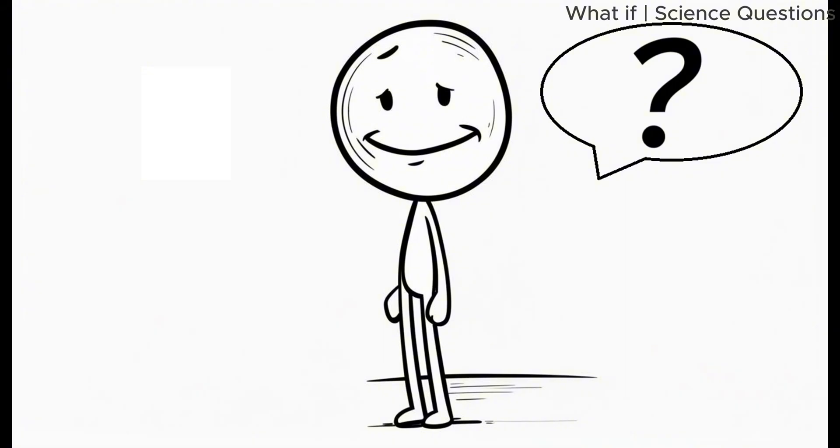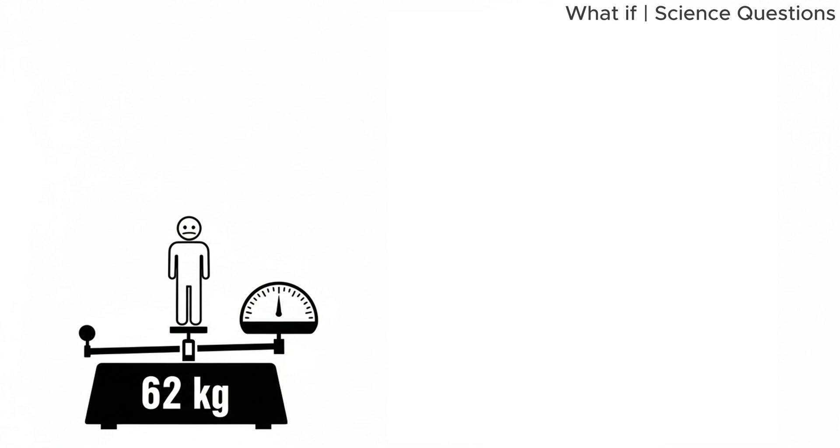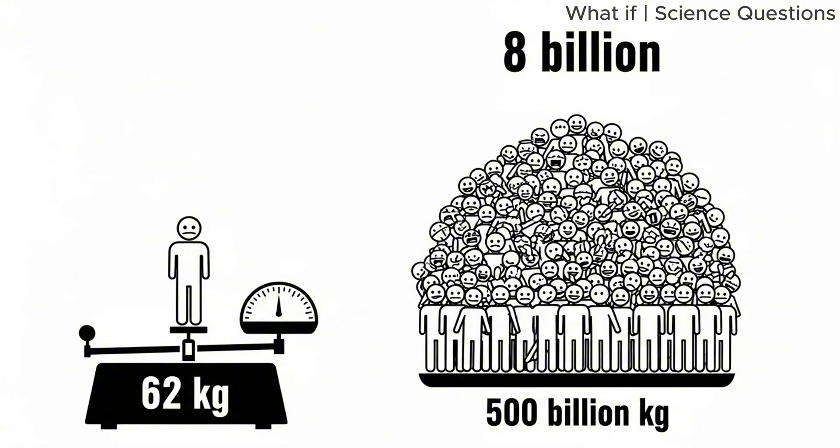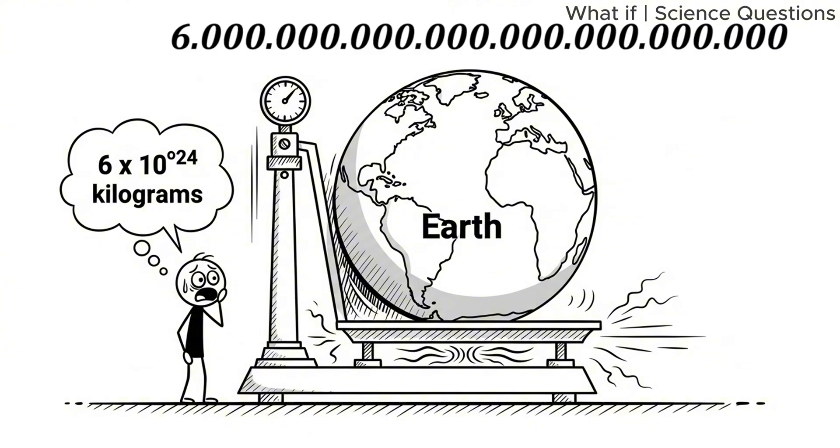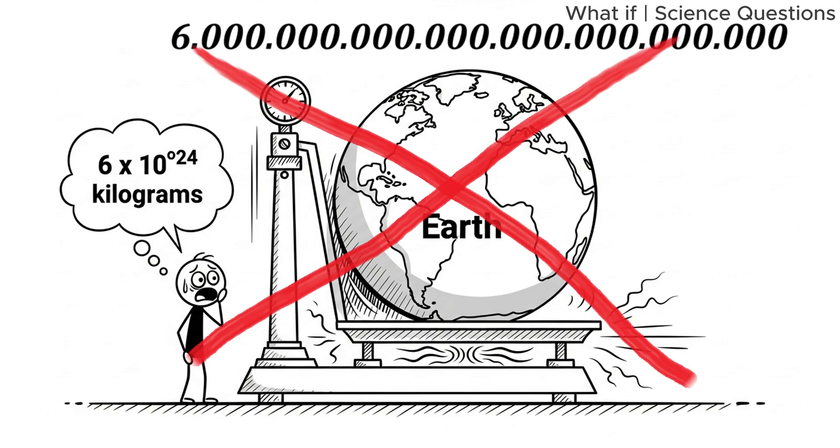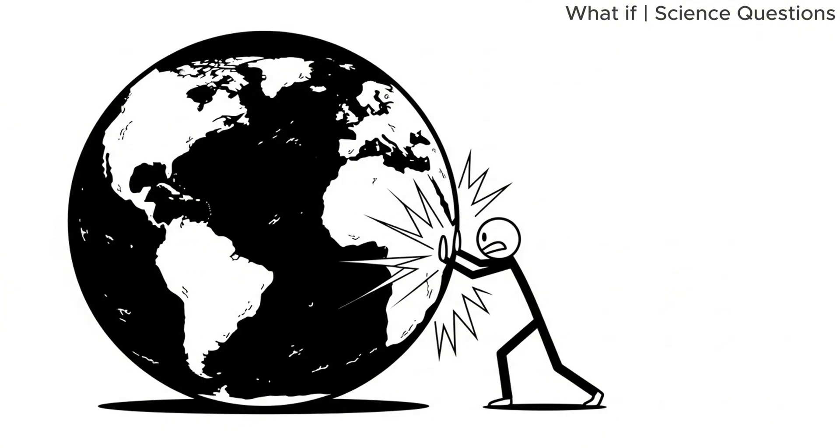Well, let's start with the basics. The average human weighs about 62 kilograms. Multiply that by 8 billion people and you get a total jumping mass of roughly 500 billion kilograms. That sounds like a lot, and it is. But Earth weighs approximately 6 times 10 to the 24th kilograms. That's a 6 followed by 24 zeros. So, in comparison, humanity's combined weight is a rounding error. Earth barely notices we exist.